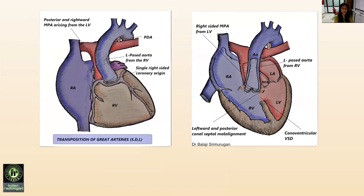These two cartoons are a beautiful representation of transposition of great arteries with L-malposition aorta. In the first cartoon, we can see a single right coronary artery with absence of the left coronary ostia. In the second diagram, there is posterior and leftward deviation of the conal septum and a large conoventricular VSD.